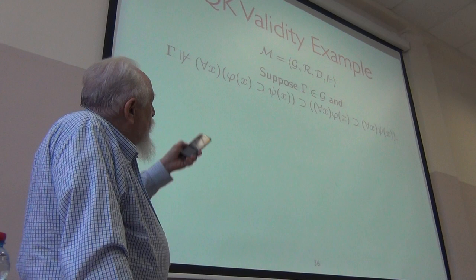Suppose you have a model and a world in it where this isn't true. So, this fails at gamma.